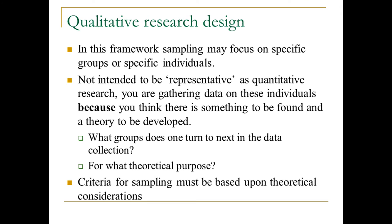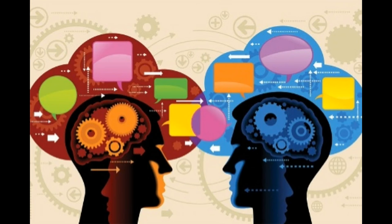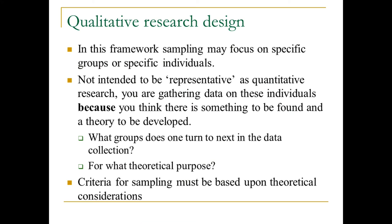Within the theoretical saturation sampling framework, you can focus on specific groups and specific individuals. Qualitative research is not intended to be representative in the same way that quantitative research is, because you're gathering data on these individuals because you think there is something to be found and a theory to be developed. This leads to questions such as what groups does one turn to next in the data collection, and for what theoretical purposes. The criteria for sampling must be based on your theoretical considerations, not the representativeness of the sample.